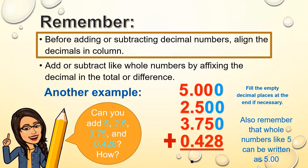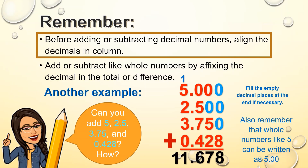It now looks balanced with the same number of decimal places. Remember to align the decimal points — that is very important. Proceeding with the addition: we have 8, then 5 plus 2 is 7, then 0 plus 5 plus 7 is 12, plus 4 is 16 — affix the dot and carry 1. Then 1 plus 5 is 6, 6 plus 2 is 8, and 8 plus 3 is 11. The final answer is 11.678.